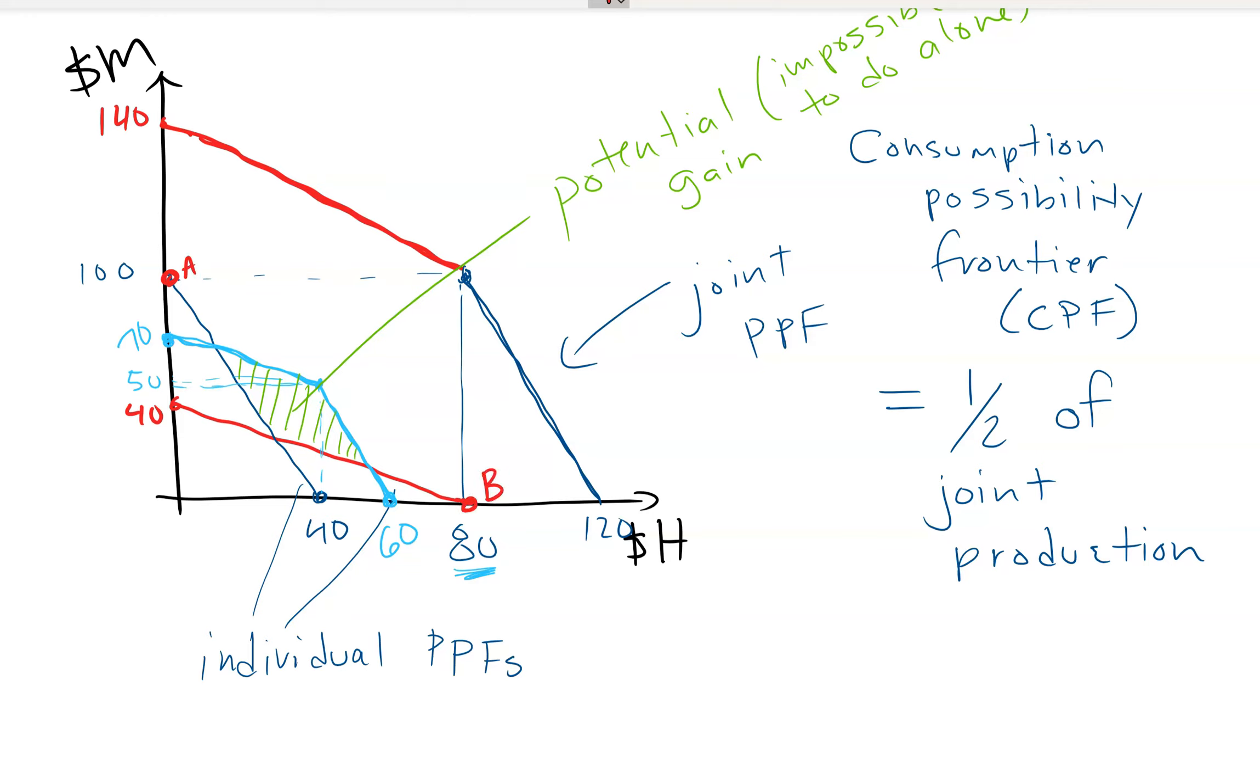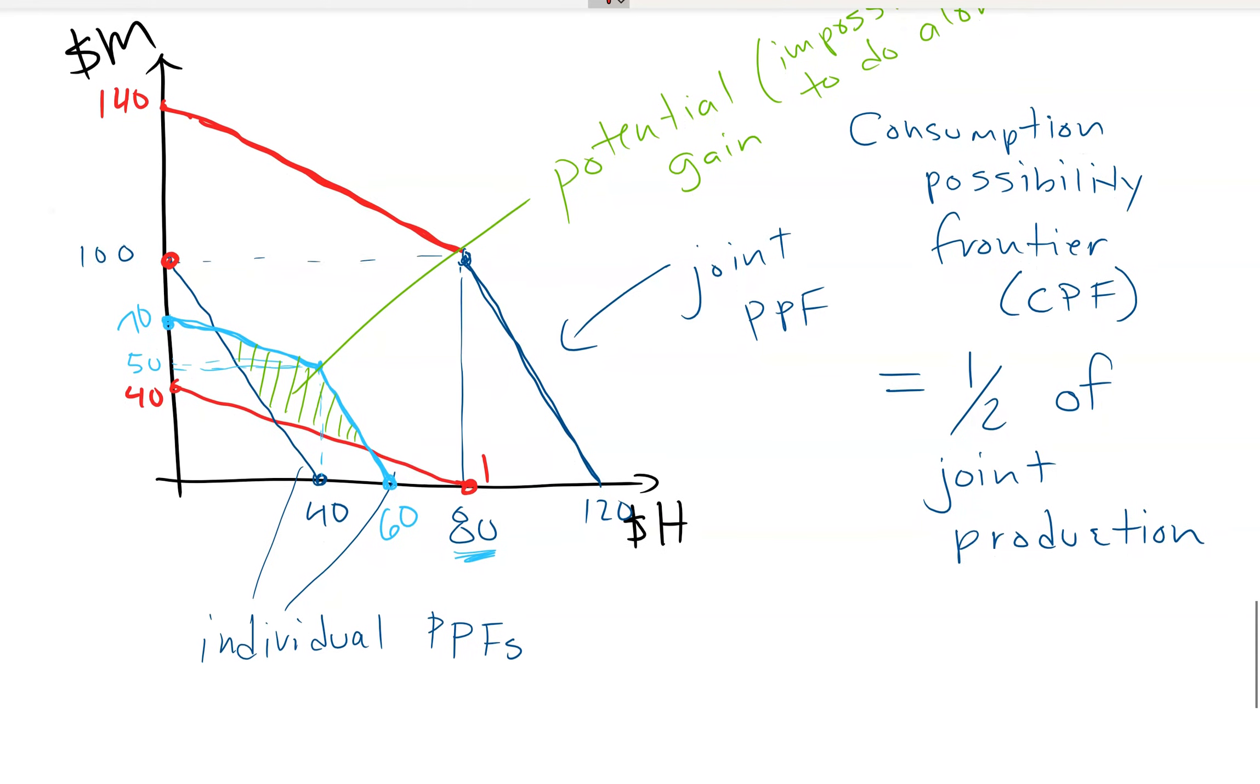Because they don't have to share with this other person. But if they like having both things, then they would be better off together. It's just like the trade problem. They can get more total consumption, each of them, than they could alone.